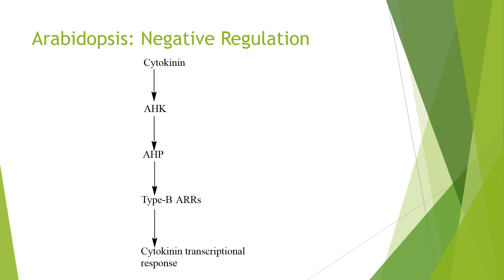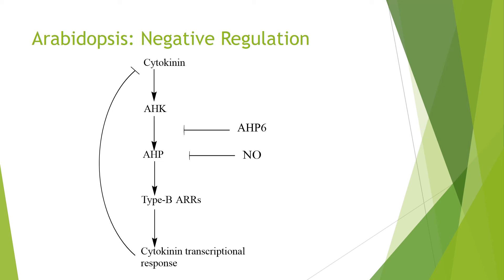In signaling systems, negative regulation is very important. AHP6 lacks a histidine residue conserved in other AHPs and therefore cannot take part in the phosphorelay, competitively inhibiting AHP binding to activated receptors. Nitric oxide, a signaling molecule found ubiquitously in eukaryotes and in prokaryotic metabolism, can nitrosylate conserved cysteine residues on AHPs to reduce their activity. The cytokinin transcriptional response also acts to reduce levels of active cytokinin through transcriptional activation of cytokinin oxidase and conjugating enzymes.